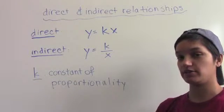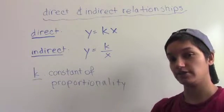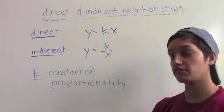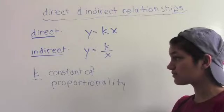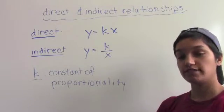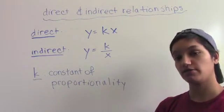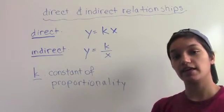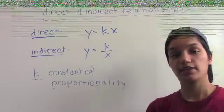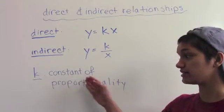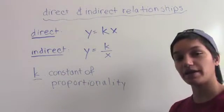On the other hand, y and x vary indirectly with each other or have an indirect relationship if the equation is of the form y equals k divided by x. If x and y have relationships of either of these forms, then we say that they are directly or indirectly proportional to each other. And then we call k the constant of proportionality. Back to you, Chris.